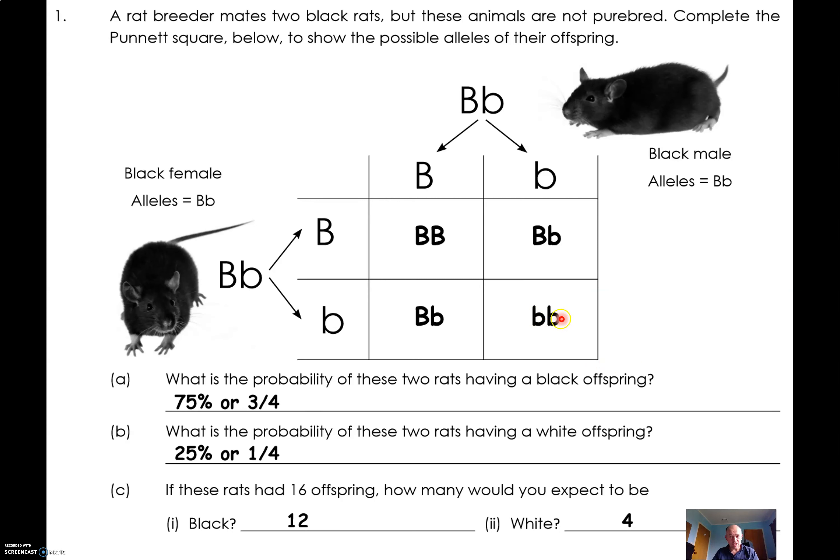So we've got three chances out of four, or 75%, that will have a black offspring. One chance out of four, 25%, will have a white offspring. And if the rats had 16 pups, we would expect about four, but it could be random, it could be different, but that's what we would expect.